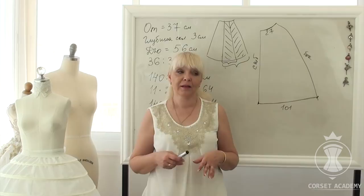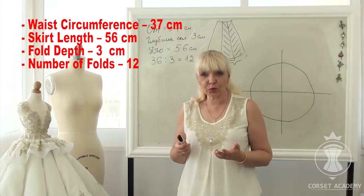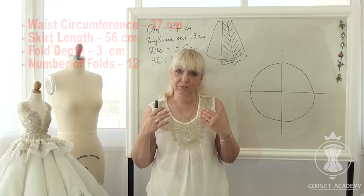I want to show you how to make a mock-up skirt with a train and circular folds. Let us use the same half-scale measurements we used in the previous calculations: waist circumference 37 cm, skirt length 56 cm, fold depth 3 cm, number of folds 12.